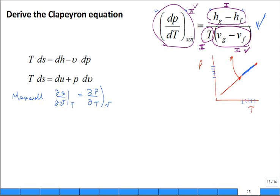In the two-phase region where you're changing phase, the pressure is a function of temperature only. So this whole partial derivative just goes to the ordinary derivative where the saturation pressure is a function of temperature only.